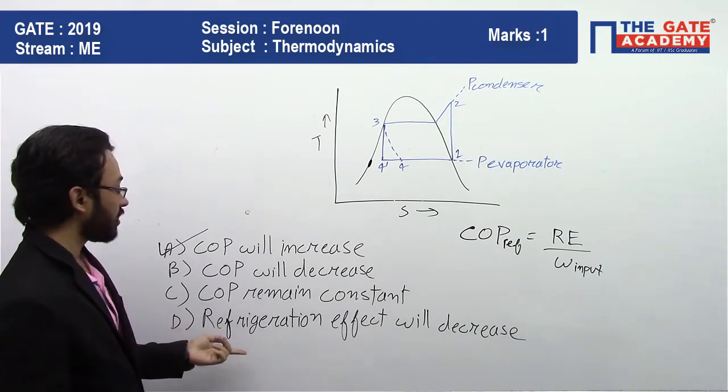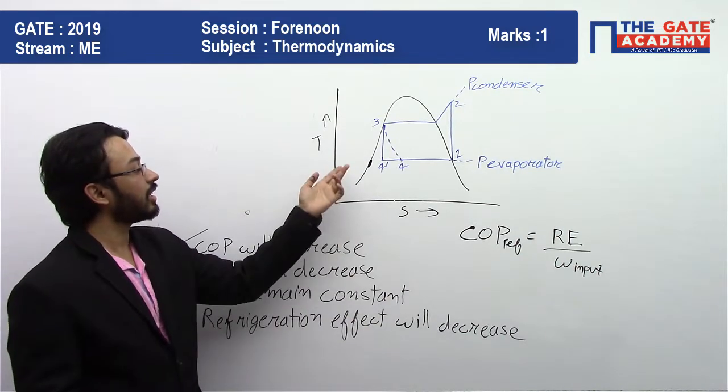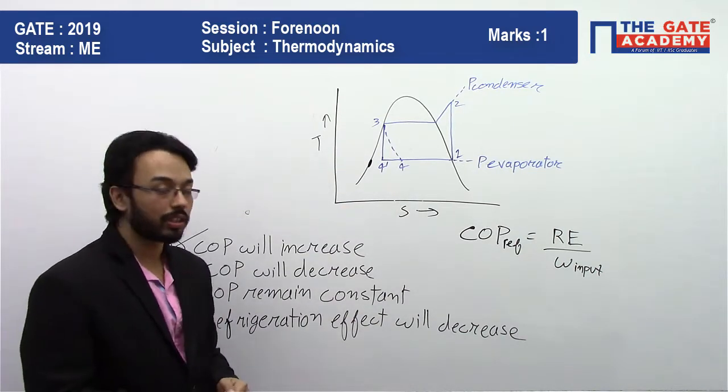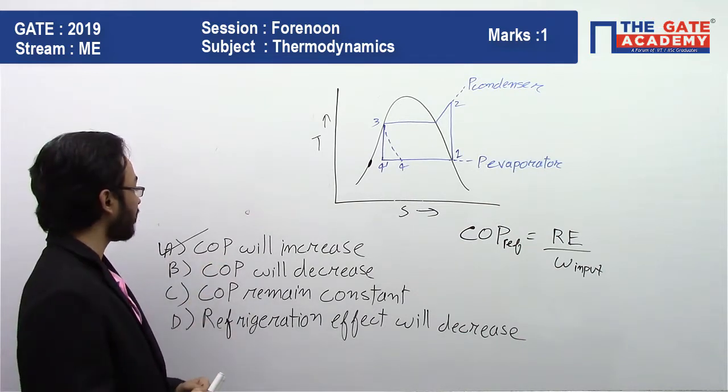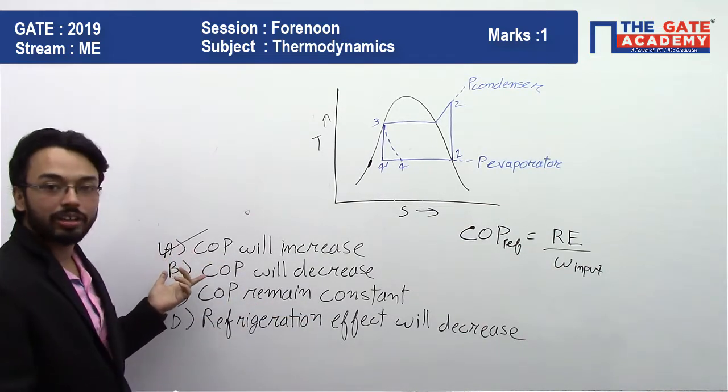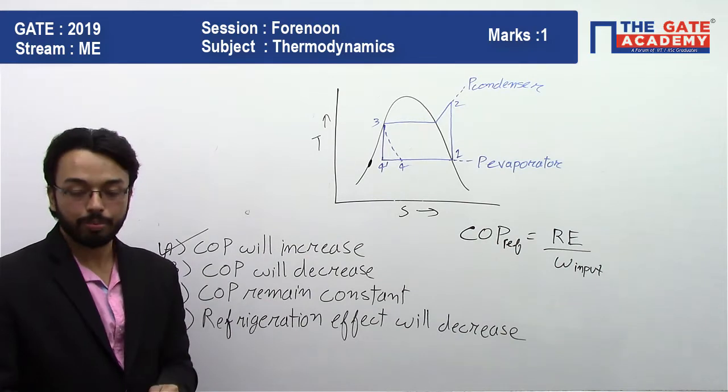The right option is COP will increase. Option D was refrigeration effect will decrease. We can clearly see that refrigeration effect will increase. So all the other options are not correct, only the correct option is A, that is COP will increase.